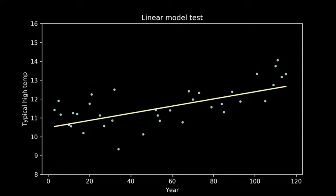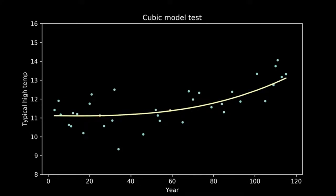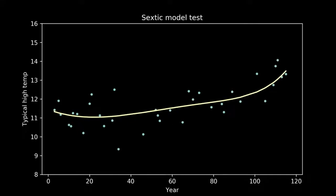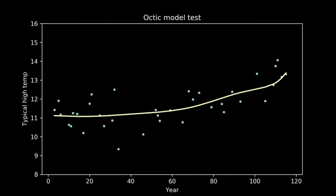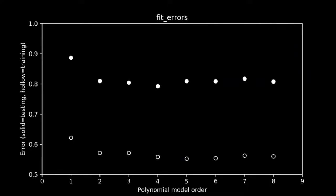Then we can go back to our collection of model candidates and try them one by one. Here are a few of the models trained on the training data and plotted against the testing data. As the models get to be higher order, we can see that the wiggles they developed may have been helpful for fitting the training data, but don't necessarily help them fit the testing data better. We can see an extreme example of this in the full interpolation model, where we just connect all the training data points with straight lines — it really struggles to match the testing data points. It's helpful to look at the error on the training and testing datasets for each model lined up side by side.